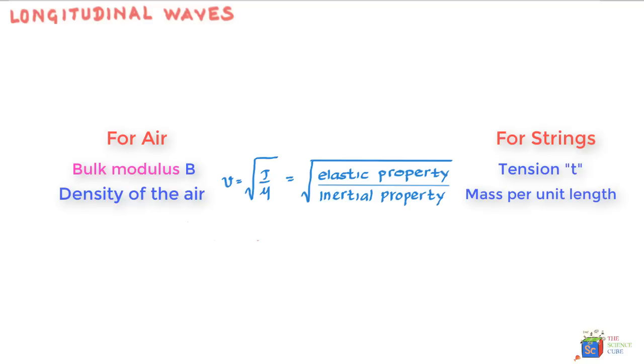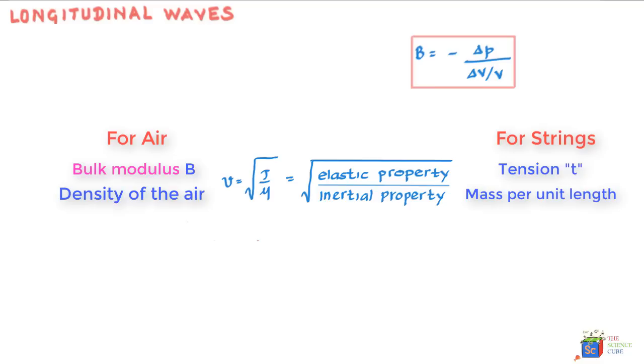And mathematically, it is written as B is equal to minus delta P upon delta capital V upon V. So let me go ahead and write this. So here delta P is the change in pressure on say a section of air. And delta V is the corresponding change in volume of air due to the pressure. And capital V is the original volume when there is no pressure applied. Or you could say that delta V upon capital V is a fractional change in volume.